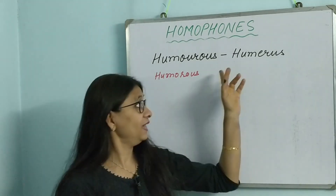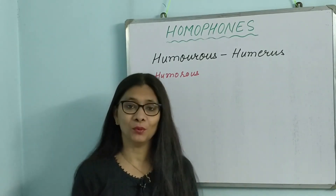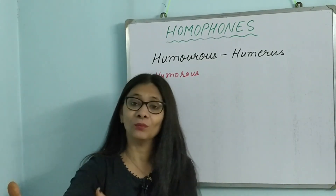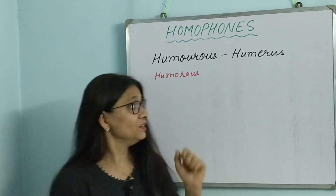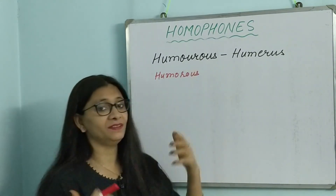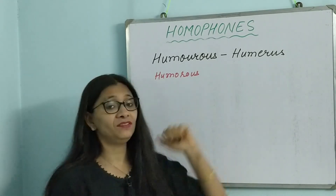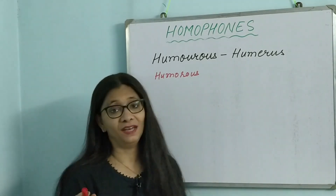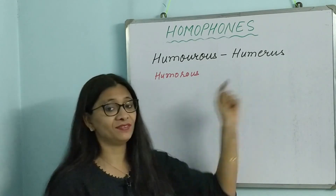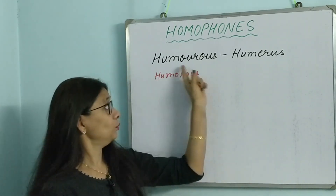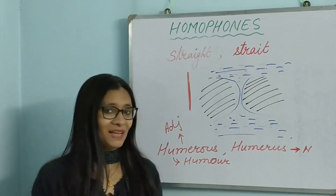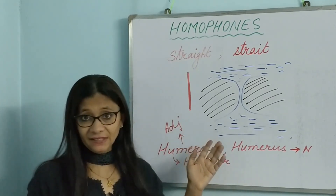Now 'humerus' — H-U-M-E-R-U-S — is the name of a bone, specifically the long bone of the forearm. So 'humorous' is an adjective describing a quality, while 'humerus' is a noun — the name of a bone. They are homophones since they have the same pronunciation.